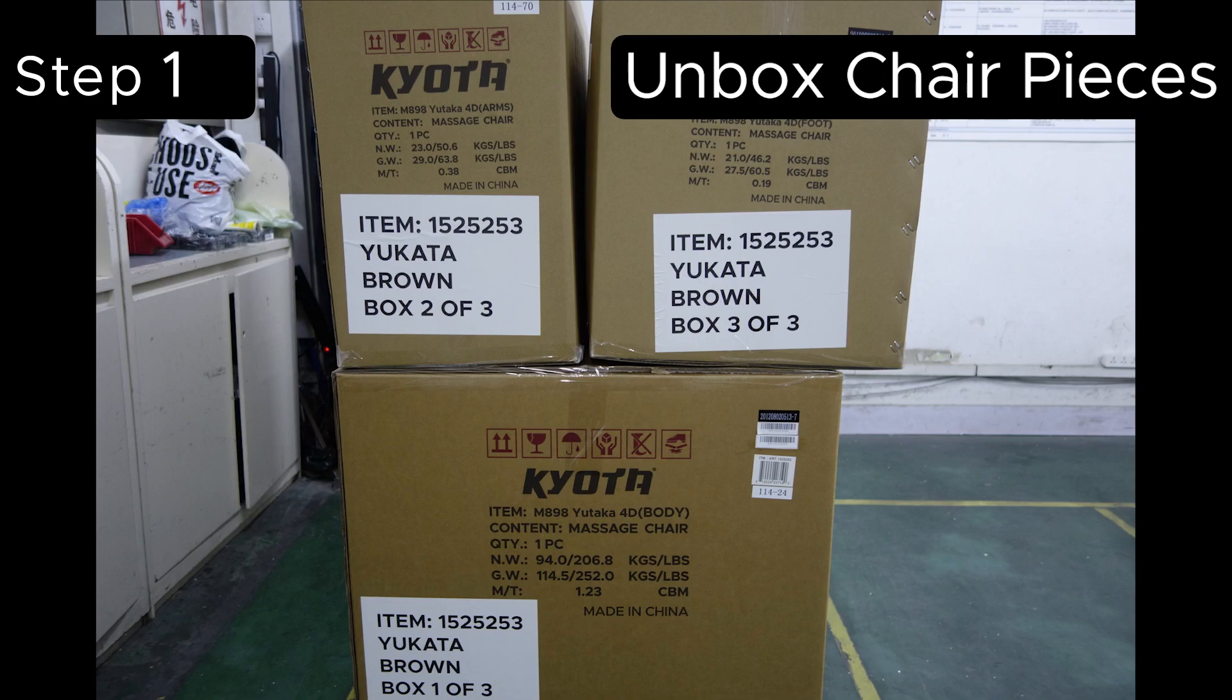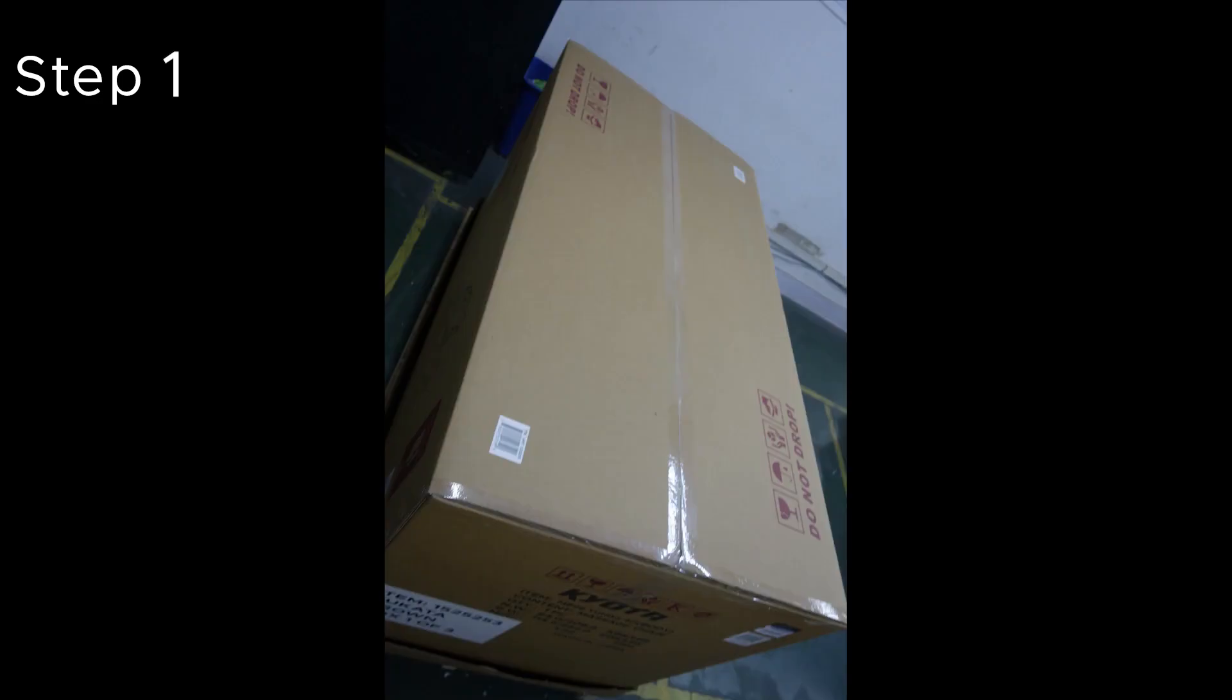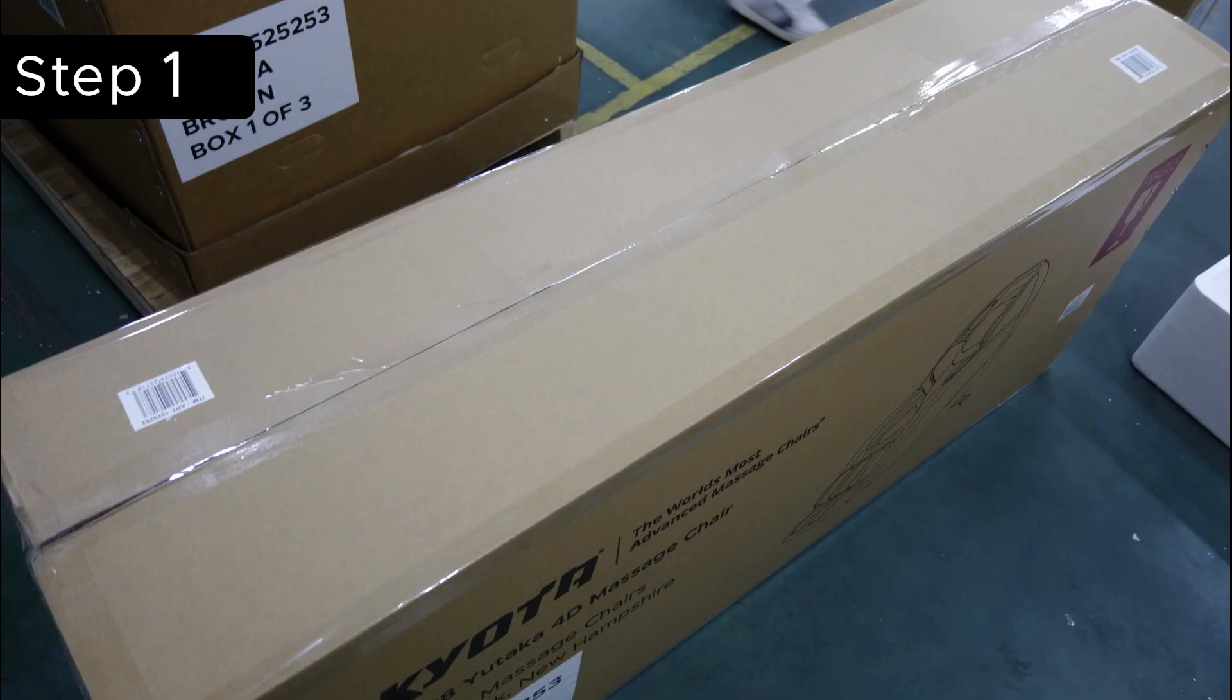We suggest that you do this assembly in the room that you're planning to use the chair in, because once fully assembled, the chair won't be able to move through most doors. Your M898 is going to arrive in three boxes. The largest will contain the main body of the chair. The middle-sized box contains the arms, and the smallest box contains the footrest.